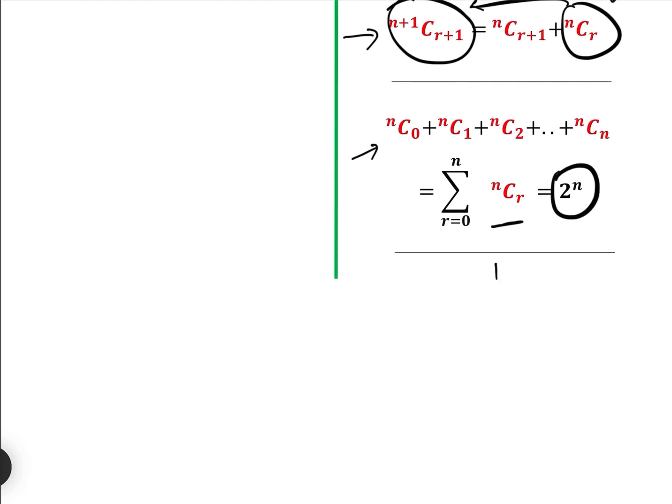And that one actually comes from Pascal's triangle. I'm sure there are better ways of proving it. But if you just add up those, you get 1, 2, 4, 8, 16, etc. So that's why.